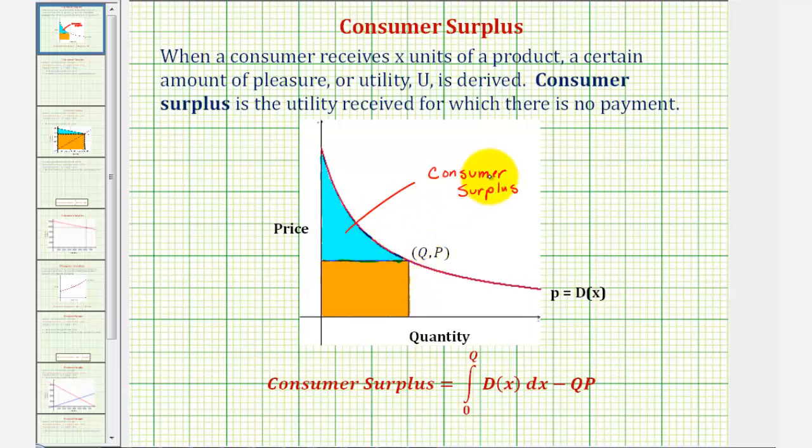To determine the consumer surplus, we'll find the integral of the demand function from zero to Q and then subtract Q times P. So we're finding the area under the demand function from zero to Q and then subtracting out the area of this rectangle, which is Q times P, leaving us with this area here, which is the consumer surplus.